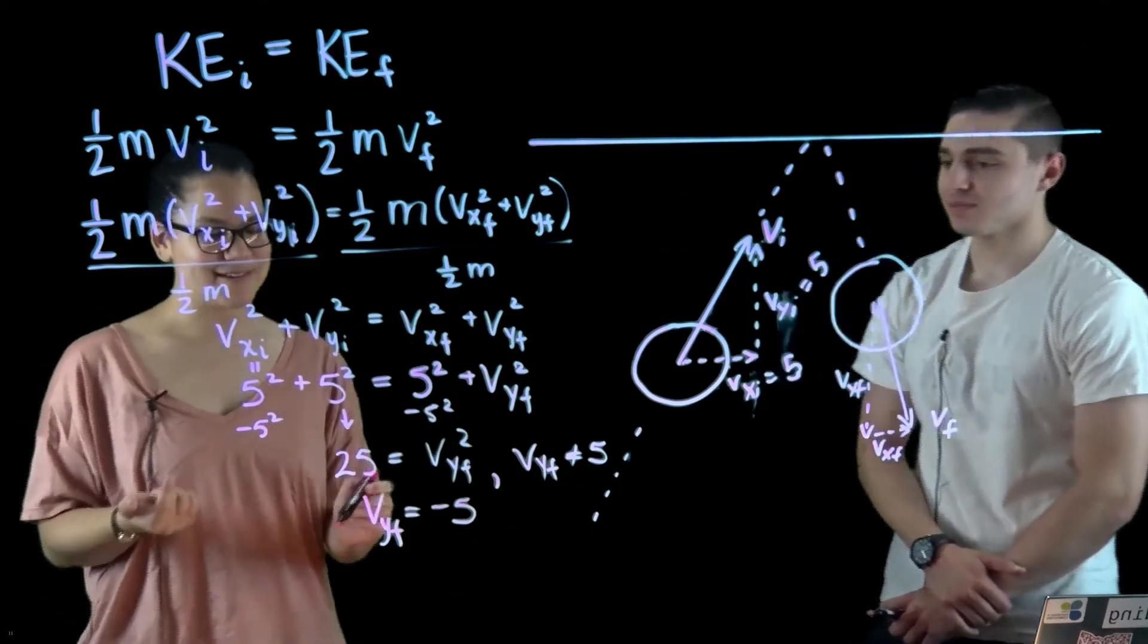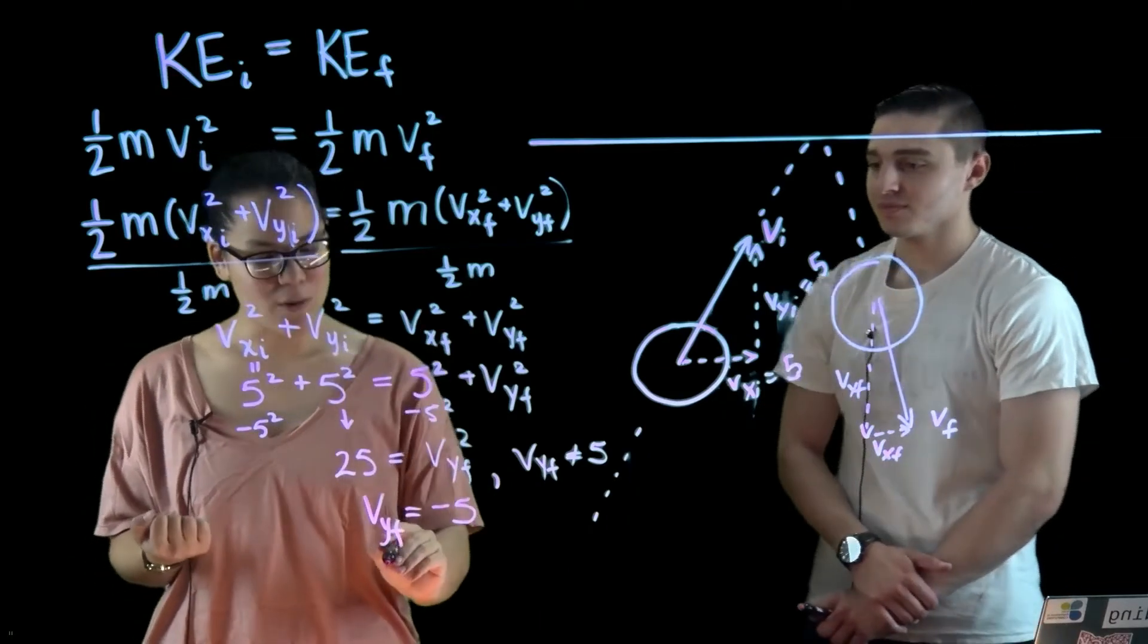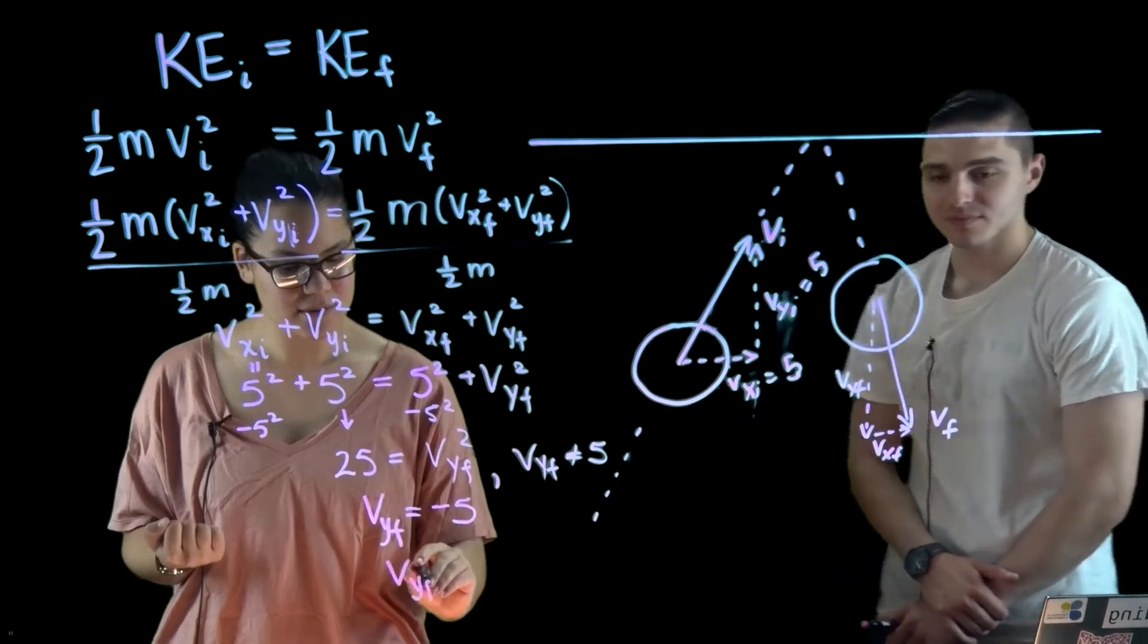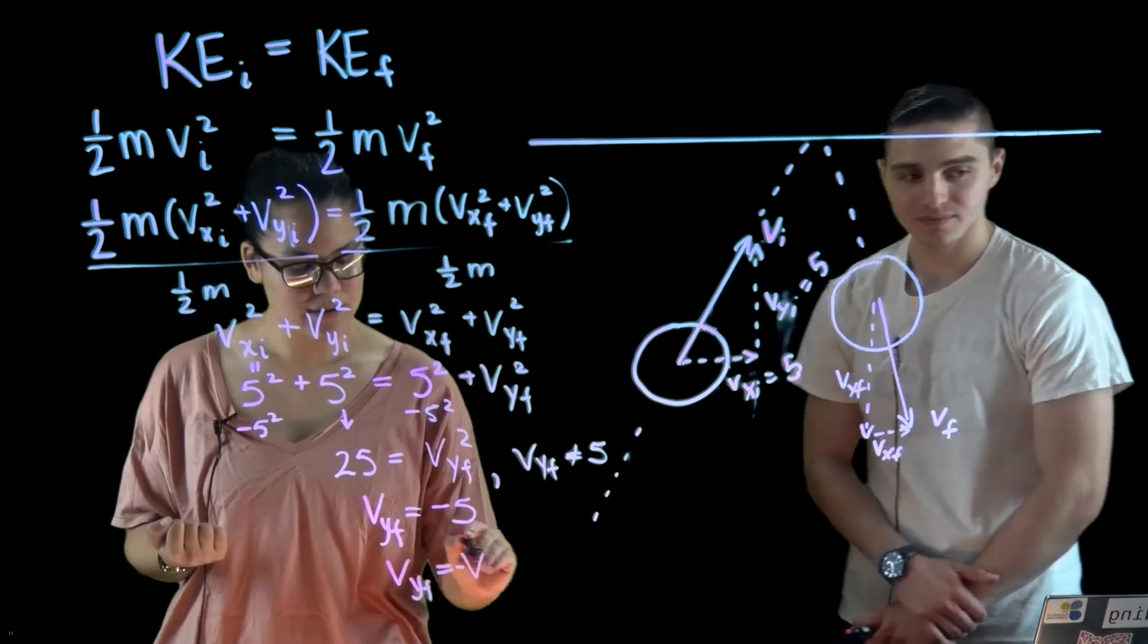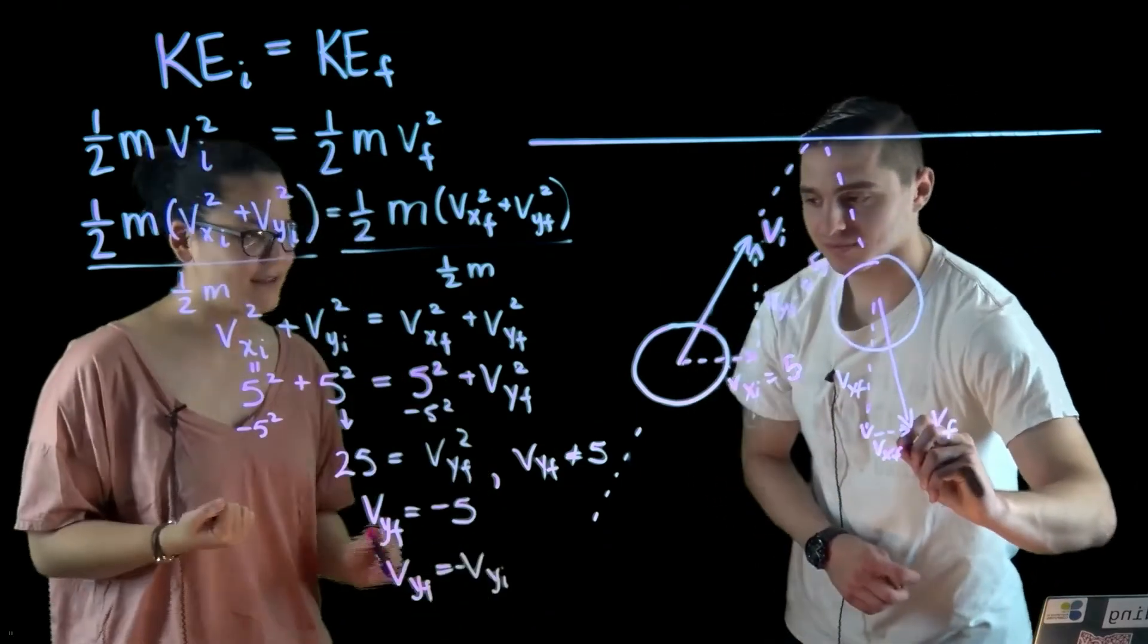So in general, we'll find that when the blob hits the ceiling, that y component will flip sign. And by flipping direction, we add that negative sign there.